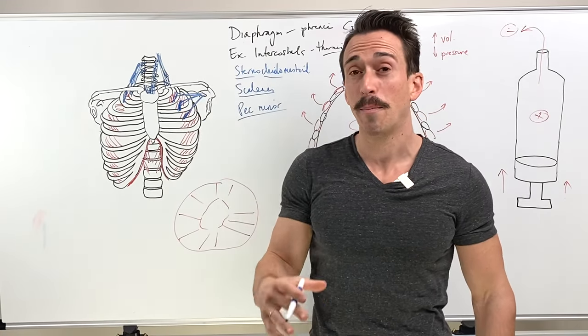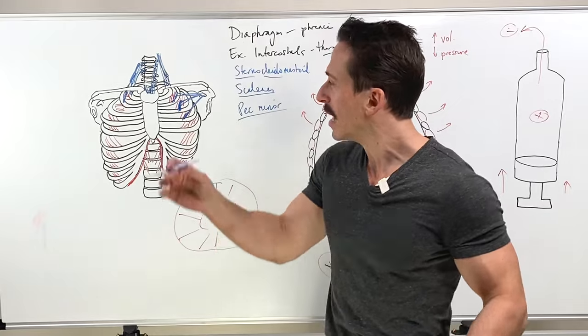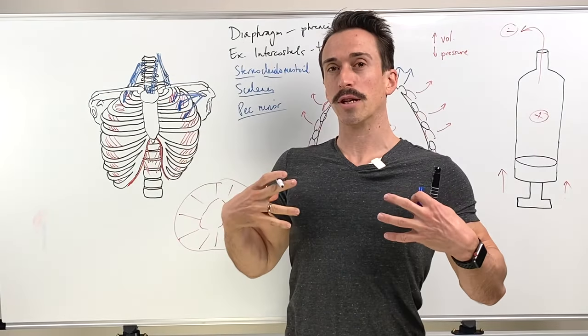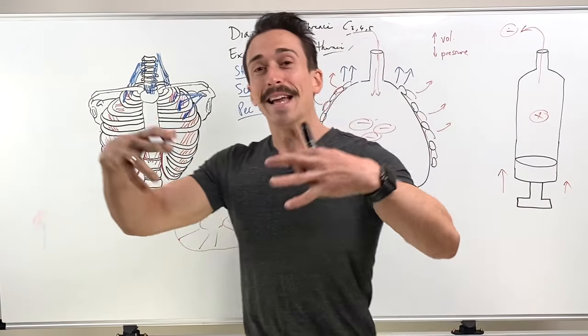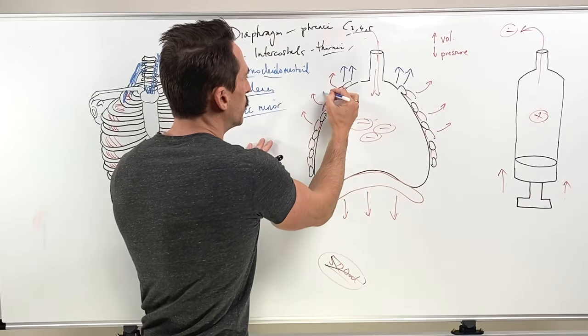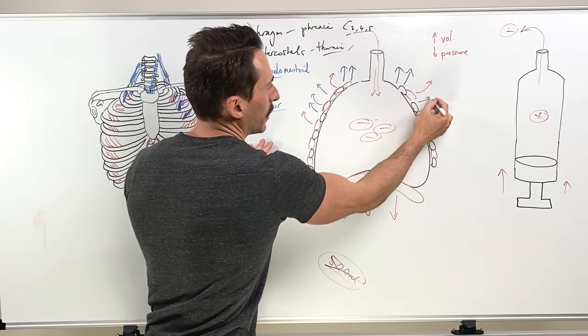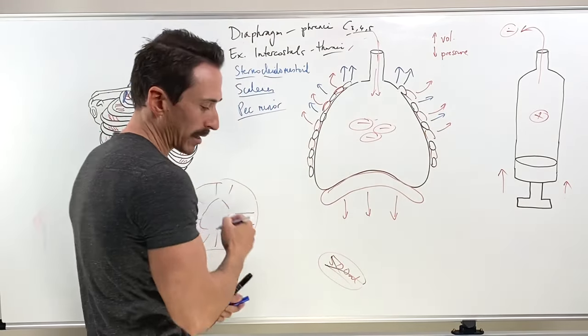So this is pec minor. Now pec major also plays a role here. That's the larger muscle associated with the pec. But again, what happens when this contracts? Lifts up and out the ribcage, increasing thoracic volume. That's pec minor.